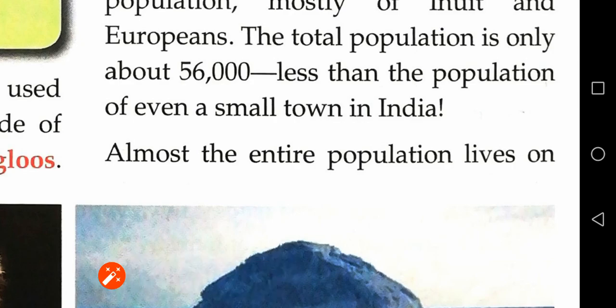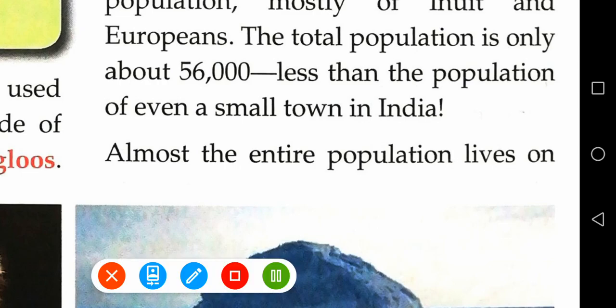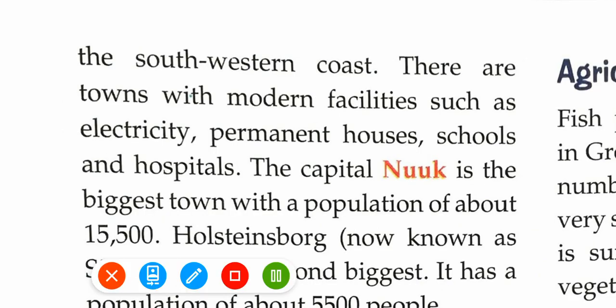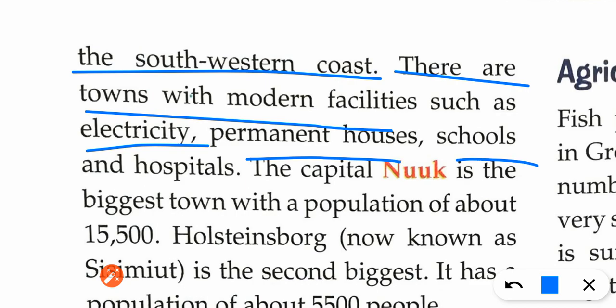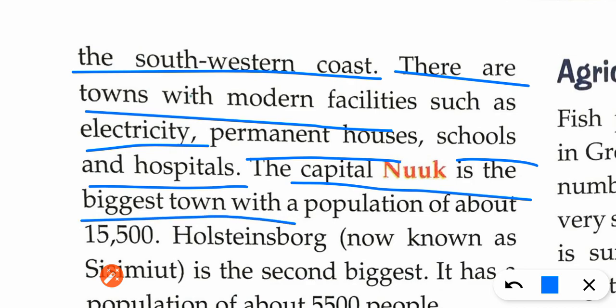Almost the entire population lives on the south-western coast, where there are towns and modern facilities such as electricity, permanent houses, schools, and hospitals. The capital Nuuk is the biggest town with a population of about 15,500.